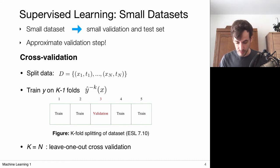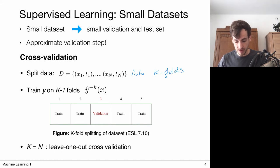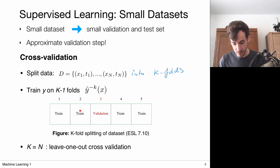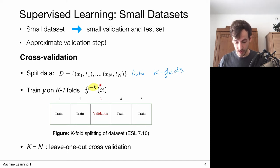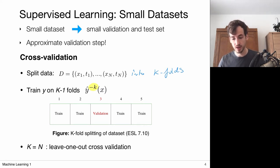In cross-validation, we split our full data into k folds. Let's say we split it in five parts — we train our model five times, each time selecting one part for validation and the remaining four folds for training. We use the notation that each model indexed with minus k means it was trained on the entire dataset without the k-th fold. If we do this k times, every fold becomes part of the validation set once, meaning every data point is used at least once for validation.